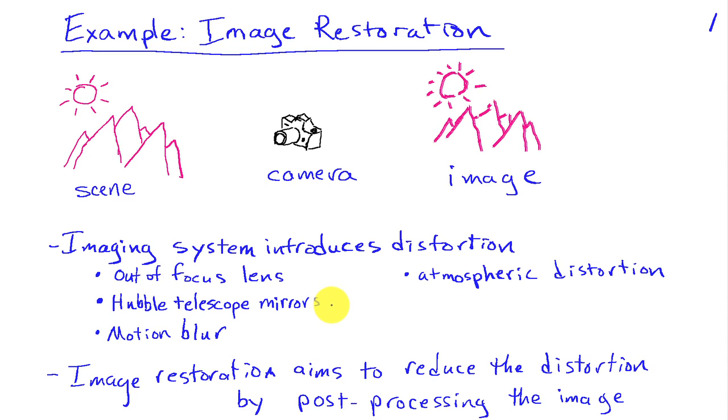They later sent up another mission to correct the mirrors, but in the meantime, we were able to use some image restoration techniques to recover some of the quality that was lost by the improper grinding. The basic idea behind image restoration is to reduce the distortion by post-processing the image, trying to correct for the distortion after we've measured the image.